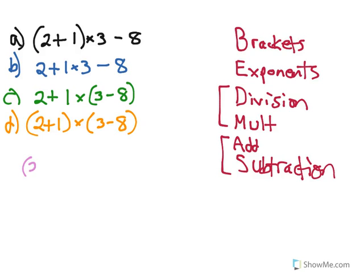So if we look at A, we have 2 plus 1 times 3 minus 8. In this case we will basically be going left to right. I always want to look for brackets first. I can see I have a bracket around 2 plus 1, so I'm going to solve that piece first. So this becomes 3 times 3 minus 8.